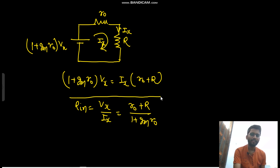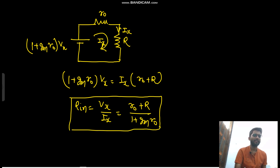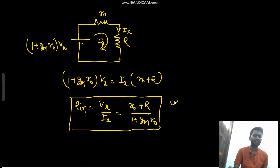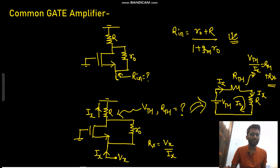So by this Thevenin method you can find R_in easily: Vth = (1 + gm·R_naught)·Vx, Rth = R_naught, replace and find the answer. You can use this method in other problems too. For the common gate amplifier specifically, you need to remember two formulas.